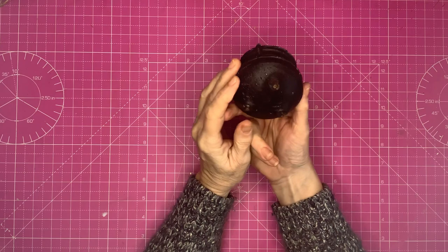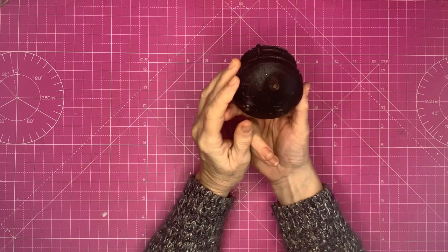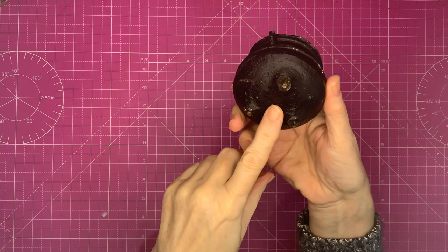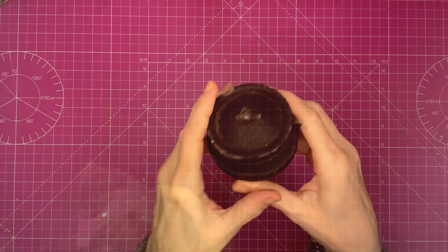Also in the free box was this cauldron. It wasn't until I got it home and looked at it closely, I realized it's a candle. Because it looks really effective, doesn't it? Very metallic. So that will come in handy for Halloween. I can't think of any other use for a cauldron, but you never know, I may come up with something.